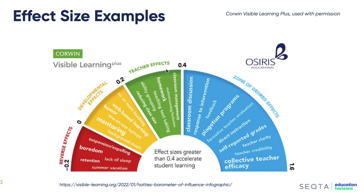There needs to be caution in interpreting the effects because there are nuances and details that sit with each of these. Certainly going to the Visible Learning Plus website and the Meta X website will give you that information. Each of those areas listed — like classroom discussion, homework, and mentoring — are considered individual influences.